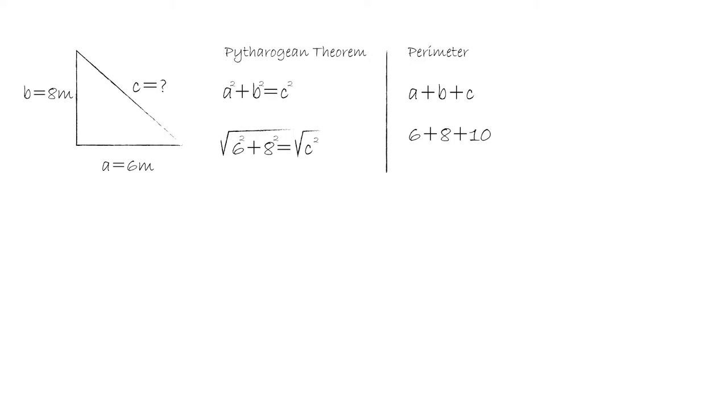Then, after that, we have to isolate c by itself. So, we take the square root of c squared and the square root of the other portion of the equation.